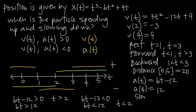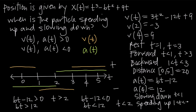Between 1 and 2, both velocity and acceleration are negative — same sign — so the particle is speeding up on the interval 1 less than t less than 2. Between 2 and 3, velocity is negative but acceleration is positive — opposite signs — so the particle is slowing down on 2 less than t less than 3. For t greater than 3, both velocity and acceleration are positive — same sign — so the particle is speeding up for t greater than 3.